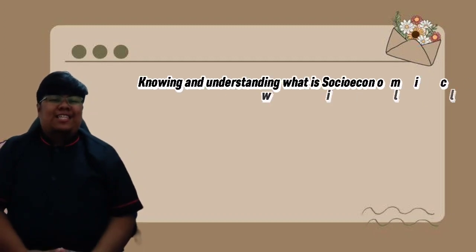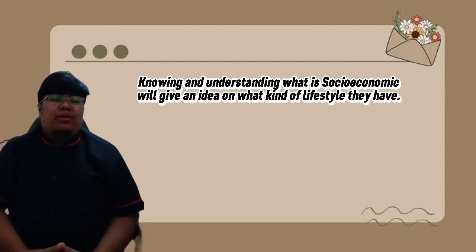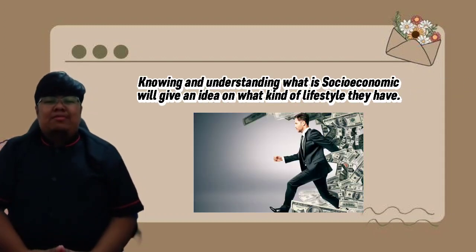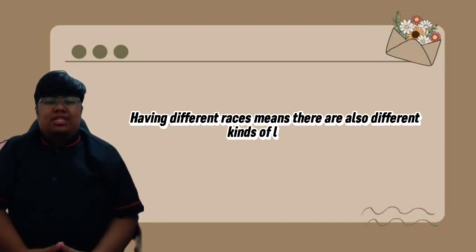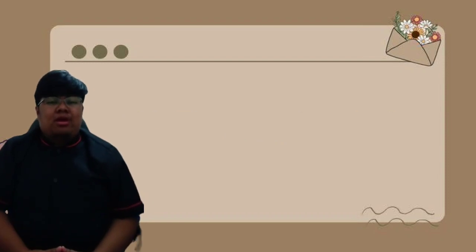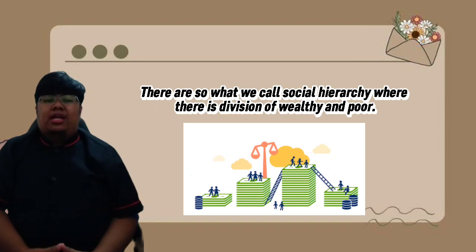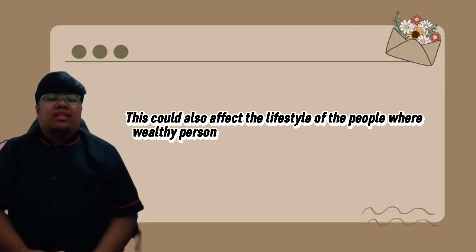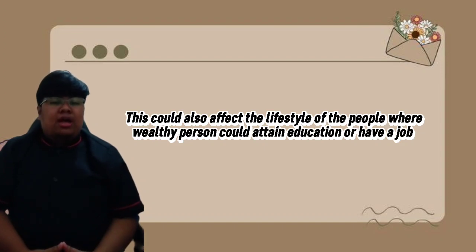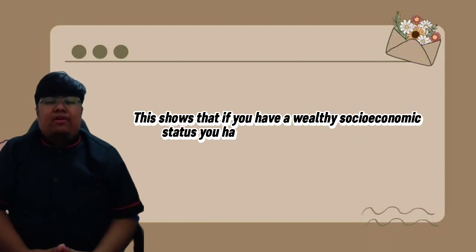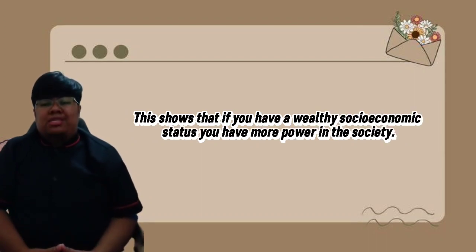Good day! Knowing and understanding what is socio-economic will give you an idea on what kind of lifestyle a certain society has. Having a different race means there are also different kinds of lifestyle. There are also what we call social hierarchy, where there is a division of the wealthy and the poor. This shows that if you have a wealthy socio-economic status, you have more power in society.